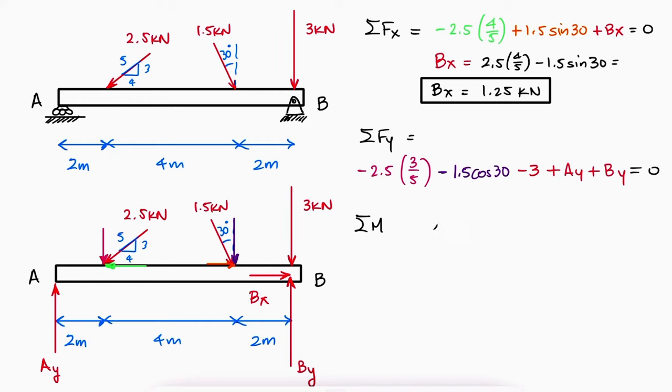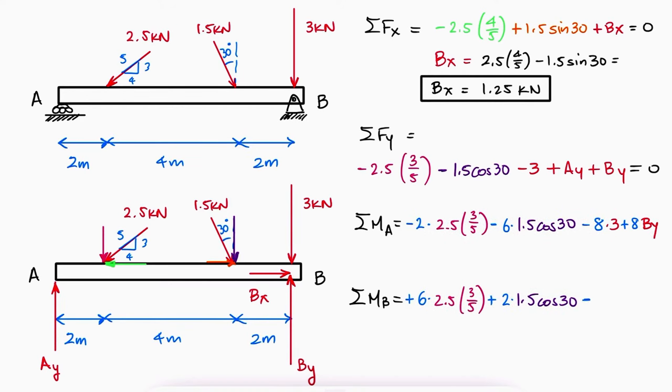In this case, a sum of moments about A or B would result in an equation without AY or BY respectively, so either one of those works.